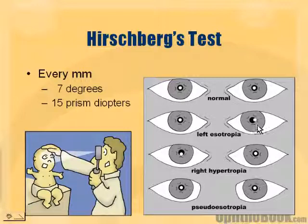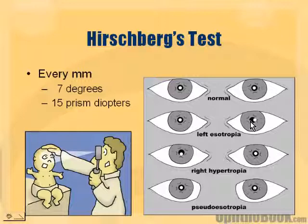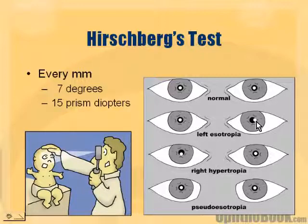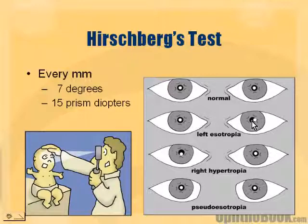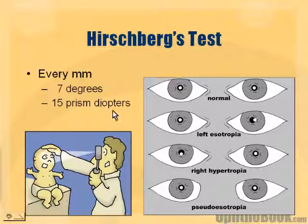However, if you have one eye that's deviated — for example, this left eye is turned inwards, it's a left esotropia — you can see that the light reflex is not quite over the pupil like it's supposed to be. In this case, the right hypertropia: the right eye is up a little bit. You can actually estimate the amount of deviation. The rule is, for every millimeter that this light is off-center — so if this was one millimeter off of the pupil — that equals about seven degrees of misalignment.